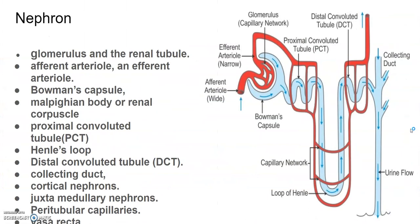Next we come to the nephron. Each kidney has nearly 1 million complex tubular structures called nephrons, which are the functional units. Each nephron has two parts: the glomerulus and the renal tubule. The glomerulus, as you can see here, is a tuft of capillaries.